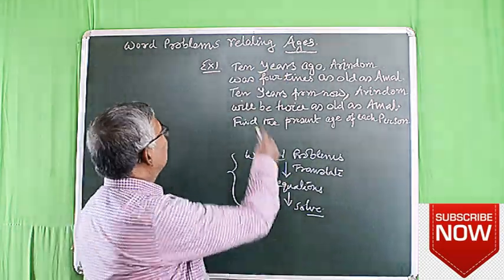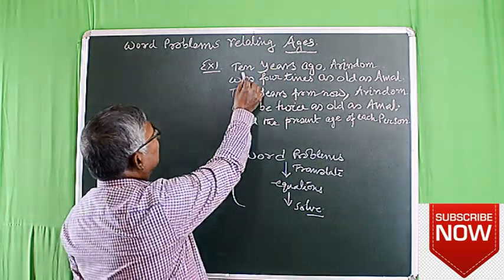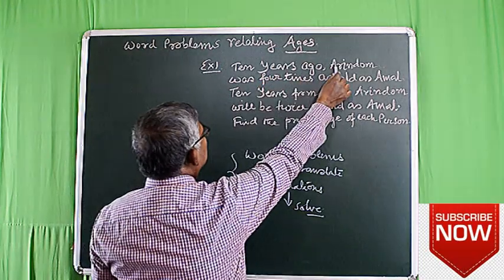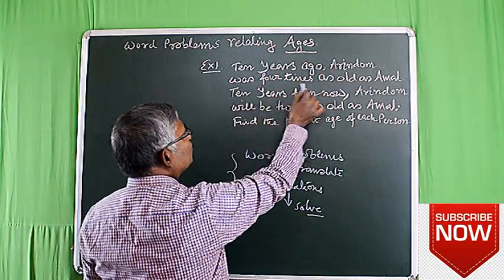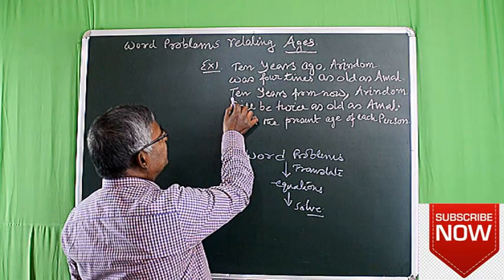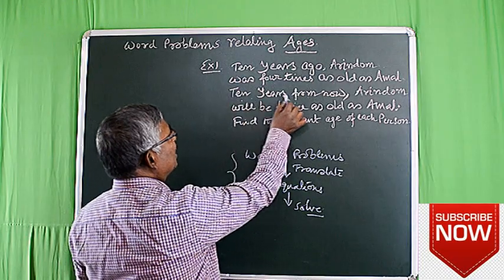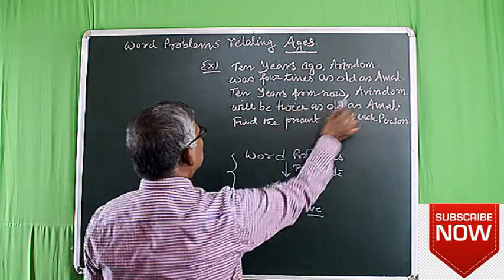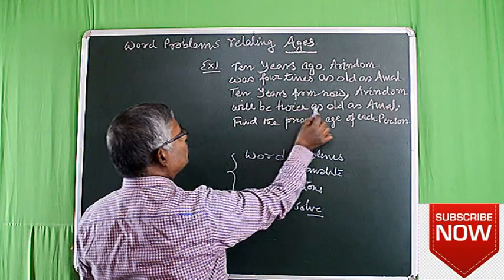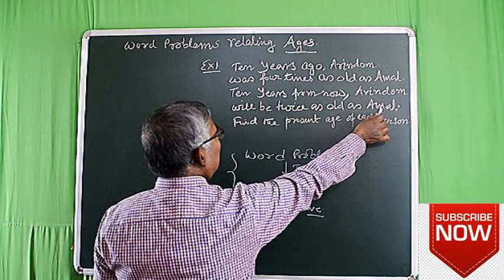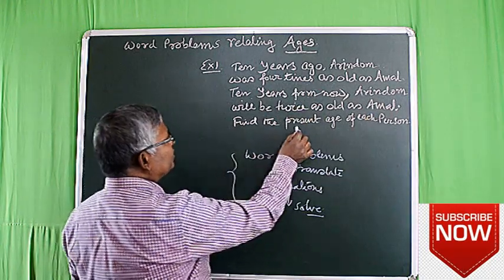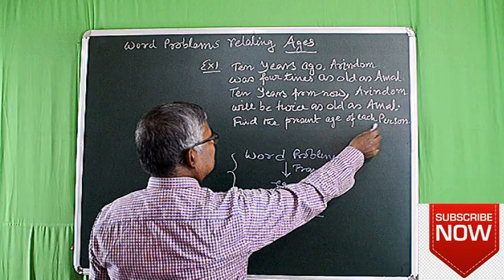Consider the problem. Ten years ago, Oringham was four times as old as Ongal. Ten years from now, Oringham will be twice as old as Ongal. Find the present age of each person.